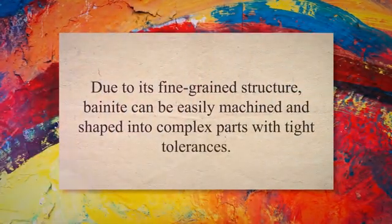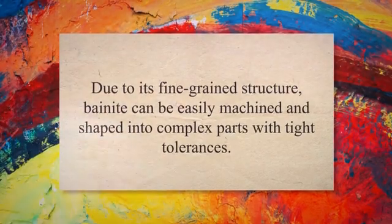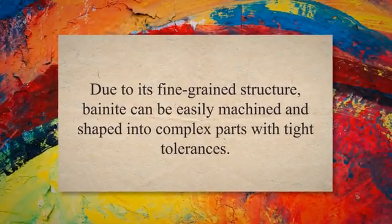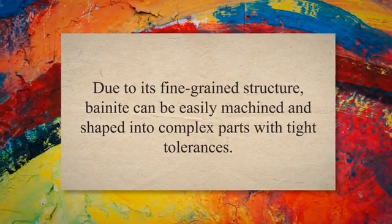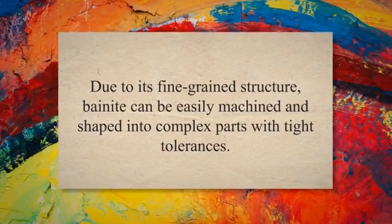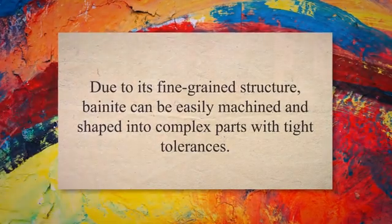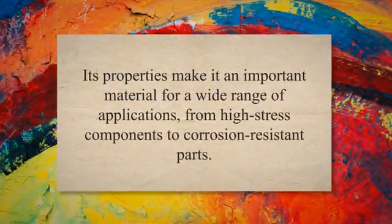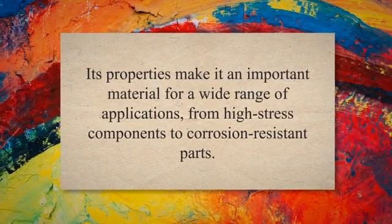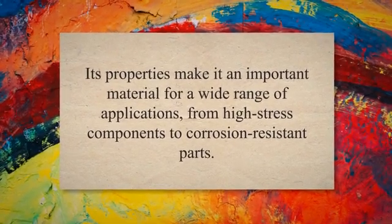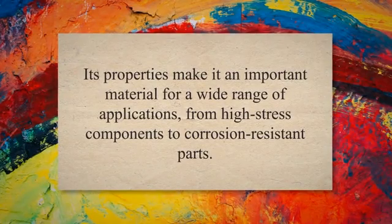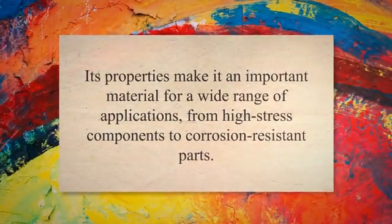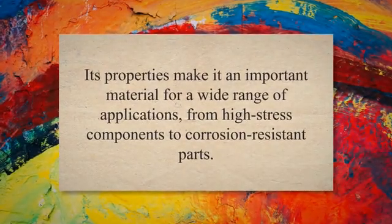Another important characteristic of bainite is its machinability. Due to its fine-grained structure, bainite can be easily machined and shaped into complex parts with tight tolerances. This makes it a popular choice for manufacturing components for the automotive and aerospace industries. Overall, bainite is a unique microstructure that offers a combination of strength, toughness, machinability, and corrosion resistance. Its properties make it an important material for a wide range of applications, from high-stress components to corrosion-resistant parts.